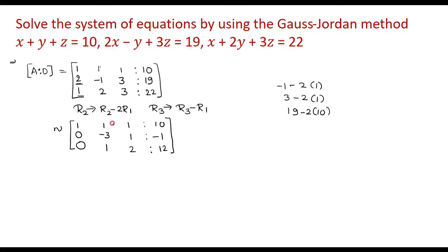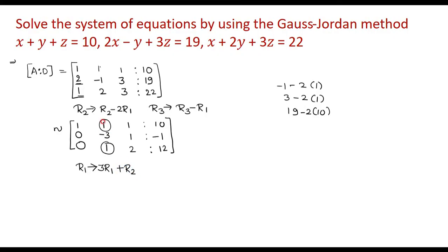Now we have the upper triangular matrix. We need to reduce two more elements to 0. We will reduce the R3 element to 0 with the help of the element in R2. The transformations are: R1 changes — since R1 has 1 and R2 has minus 3, we multiply 3 to R1 and add it to R2, making that position 0. Similarly, R3 changes as 3·R3 plus R2.